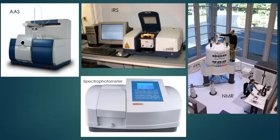These are the different types of spectrophotometers. The first one is atomic absorption spectroscopy, then infrared spectroscopy, then nuclear magnetic resonance spectroscopy, and UV visible spectrophotometer.